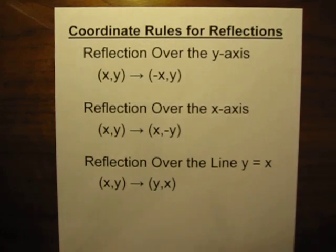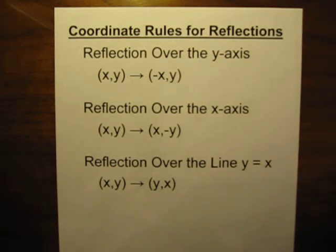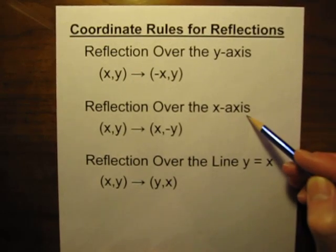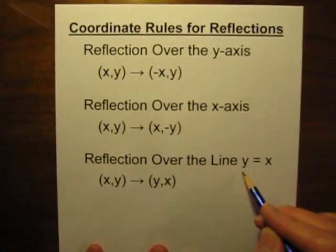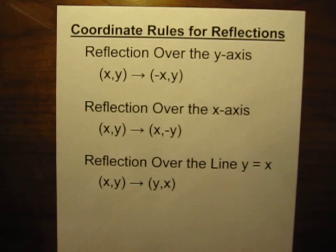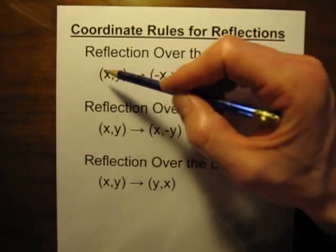Hello. In this video I'm going to be showing you what the rules are for doing reflections on a coordinate grid, or in other words, on a graph. A lot of times you'll be doing reflections and there will be a certain reflection line that you're supposed to use, and the most common cases are reflecting over the y-axis, reflecting over the x-axis, or reflecting over the line y equals x. You really can reflect over any line anywhere on the graph, but those are the three most common lines, and there are certain rules that you have to follow.